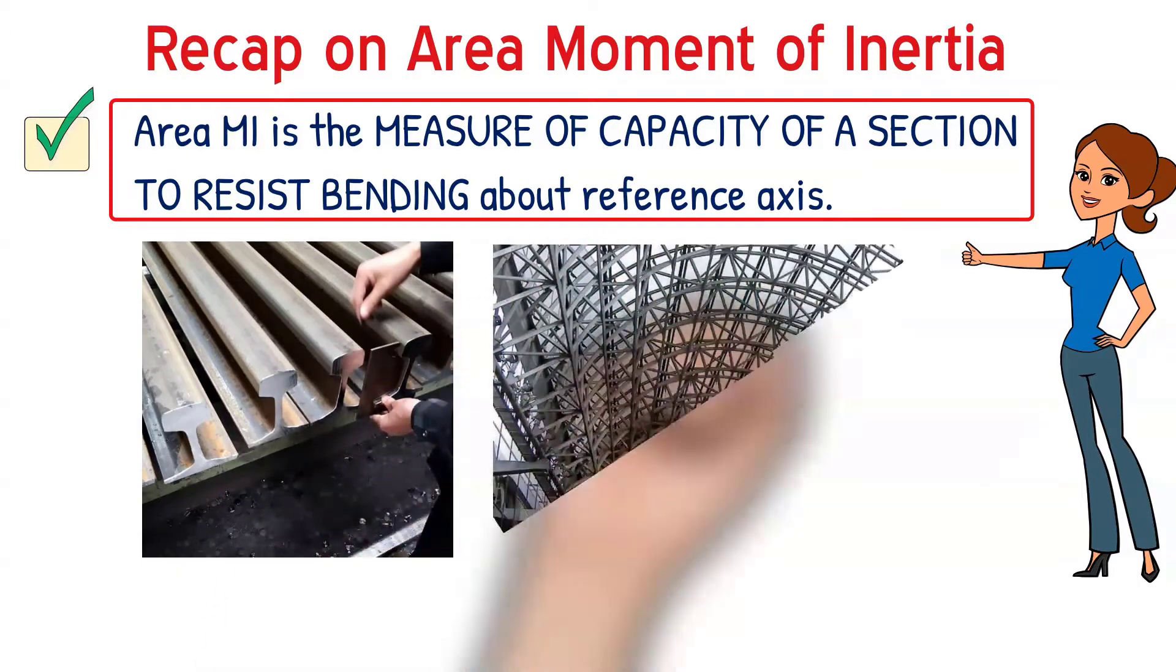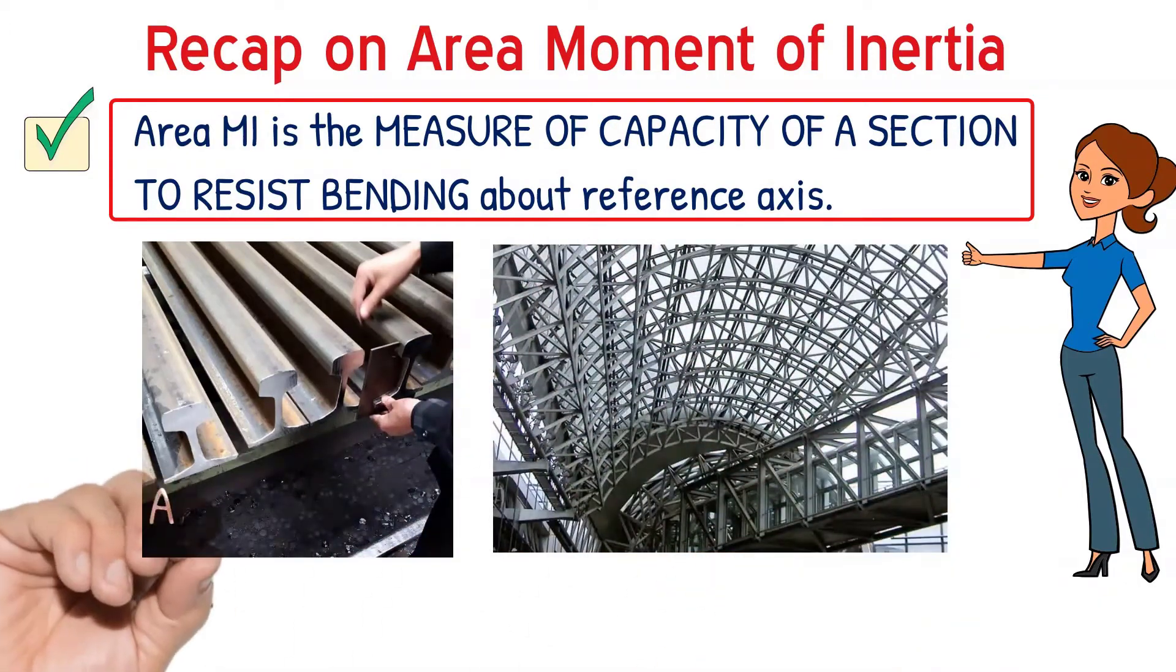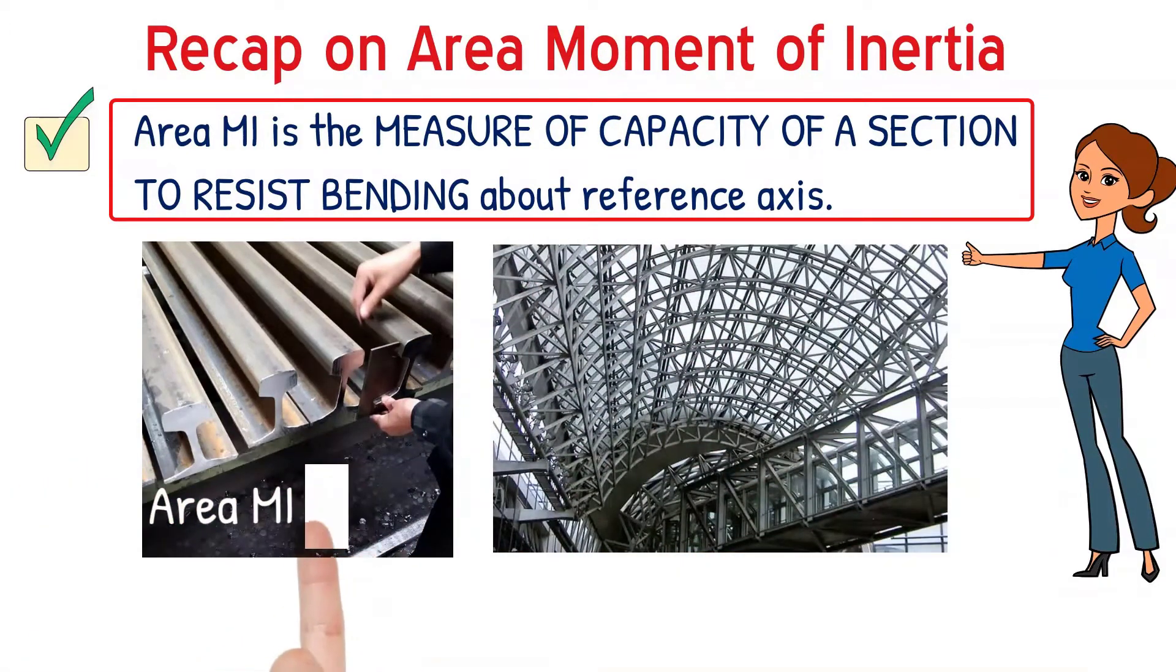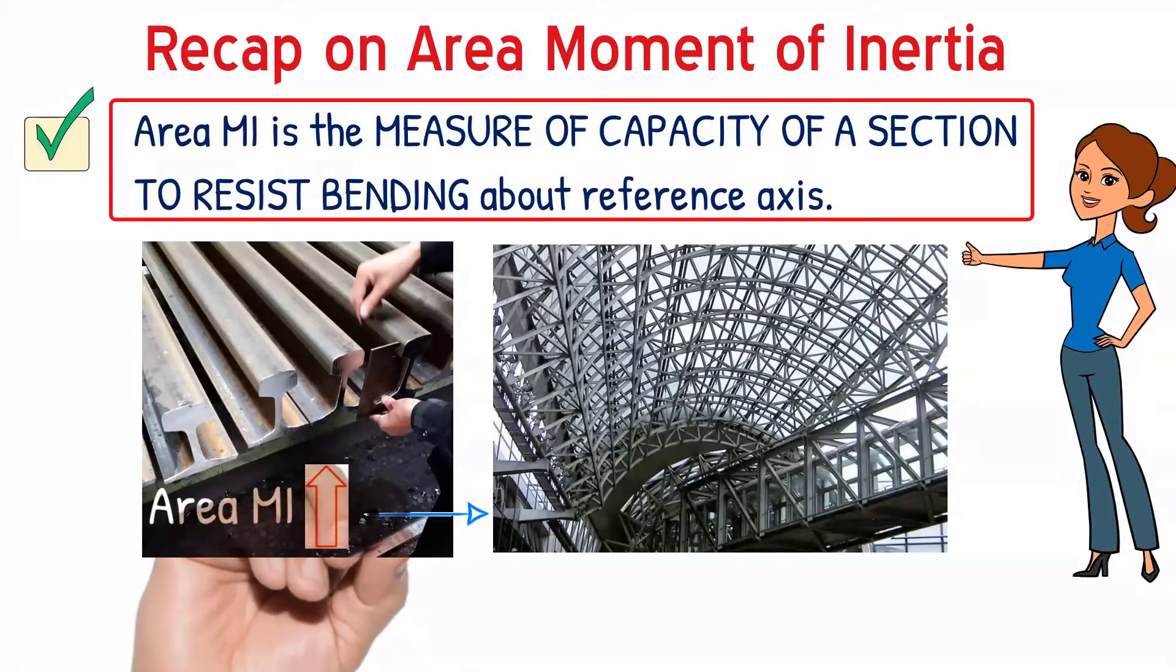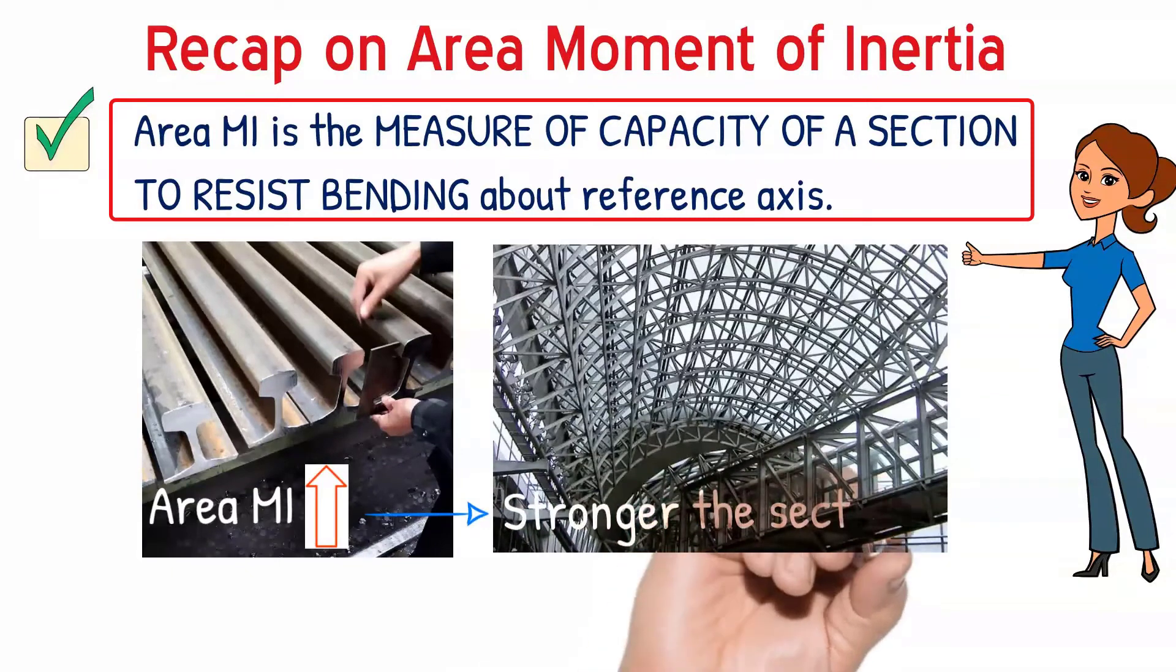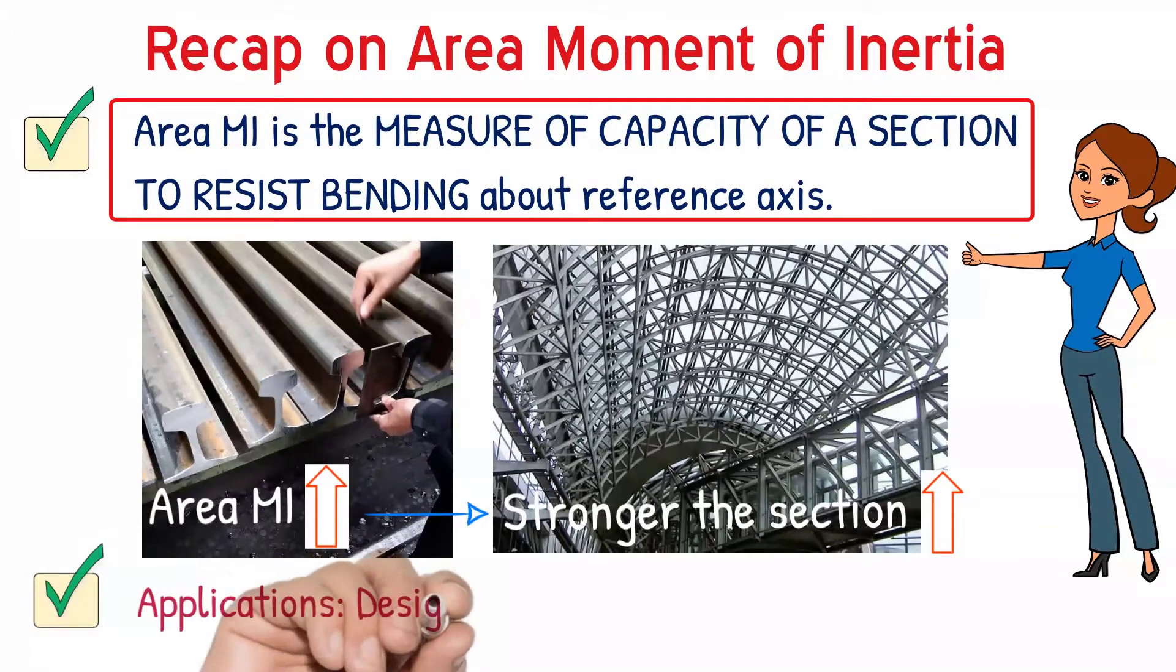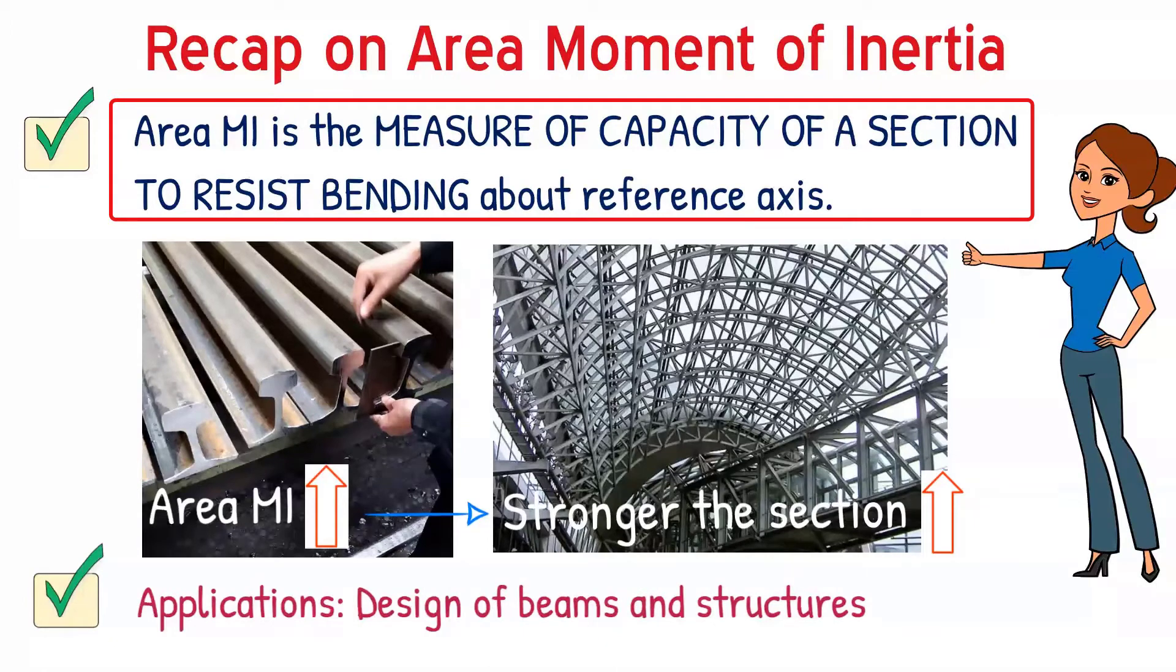Area moment of inertia in simple terms is the resistance against bending. You might have seen various structures and beams where they are made of different sections. When area moment of inertia of those sections are higher, it means they are very stronger. They will offer high resistance against bending. This concept is very useful in the design of beams and structures.